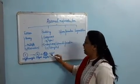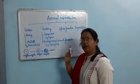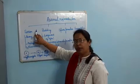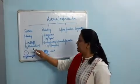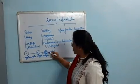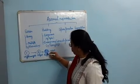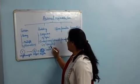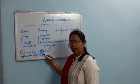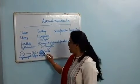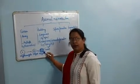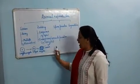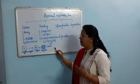Another difference is that multiple fission takes place mostly during unfavorable conditions. When conditions are favorable, unicellular organisms reproduce by binary fission, but during unfavorable conditions they reproduce by multiple fission. In this process, a very hard covering forms around the cell, known as a cyst, which protects the daughter cells inside the main cell from unfavorable conditions. When conditions become favorable, the cyst breaks and all the daughter cells come out and start behaving like new living organisms.